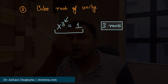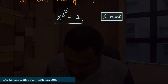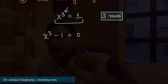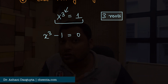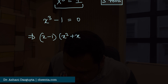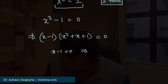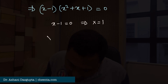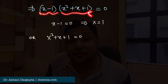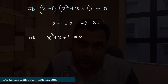The meaning of a root is that replacing x with that number makes the equation true. Bringing 1 to the left: x³ − 1 = 0. Factorizing: (x − 1)(x² + x + 1) = 0. So either x − 1 = 0, giving x = 1, or x² + x + 1 = 0.